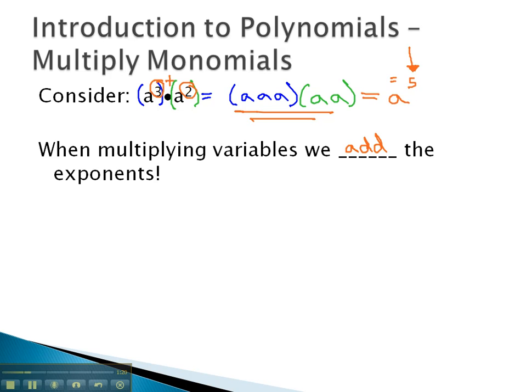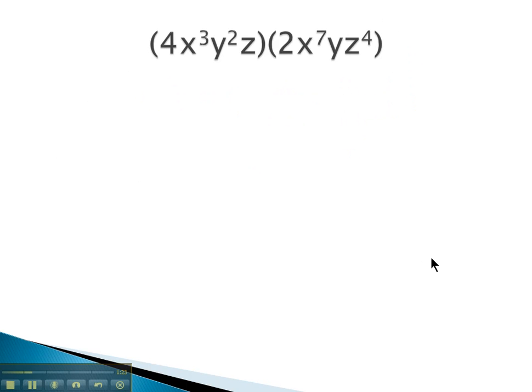So for example, if we were multiplying 4x cubed y squared z times 2x to the 7th yz to the 4th, we can take each factor individually. First, multiplying 4 times 2. That's just regular multiplication. 4 times 2 is 8.